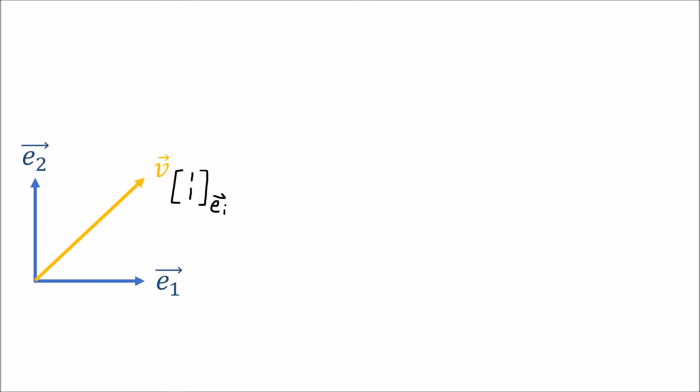So I make them twice as big. So what if I said E1 tilde equals 2E1 and E2 tilde equals 2E2? Well, the new coordinate system would look like this, where the basis vectors are twice as big.